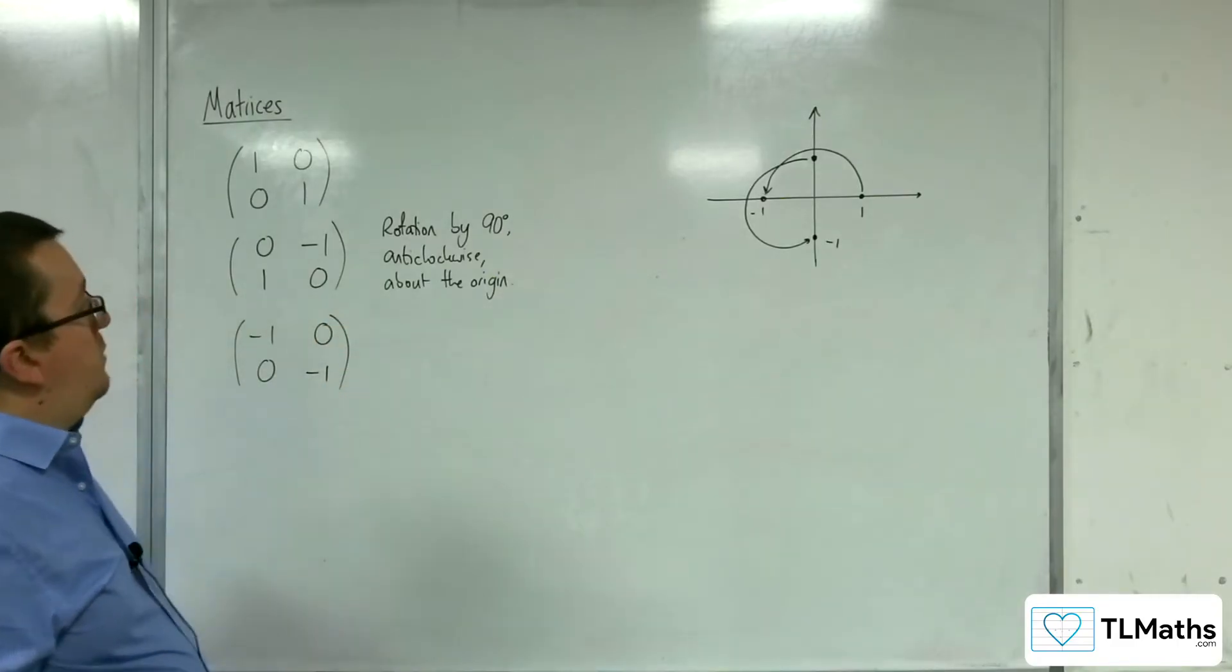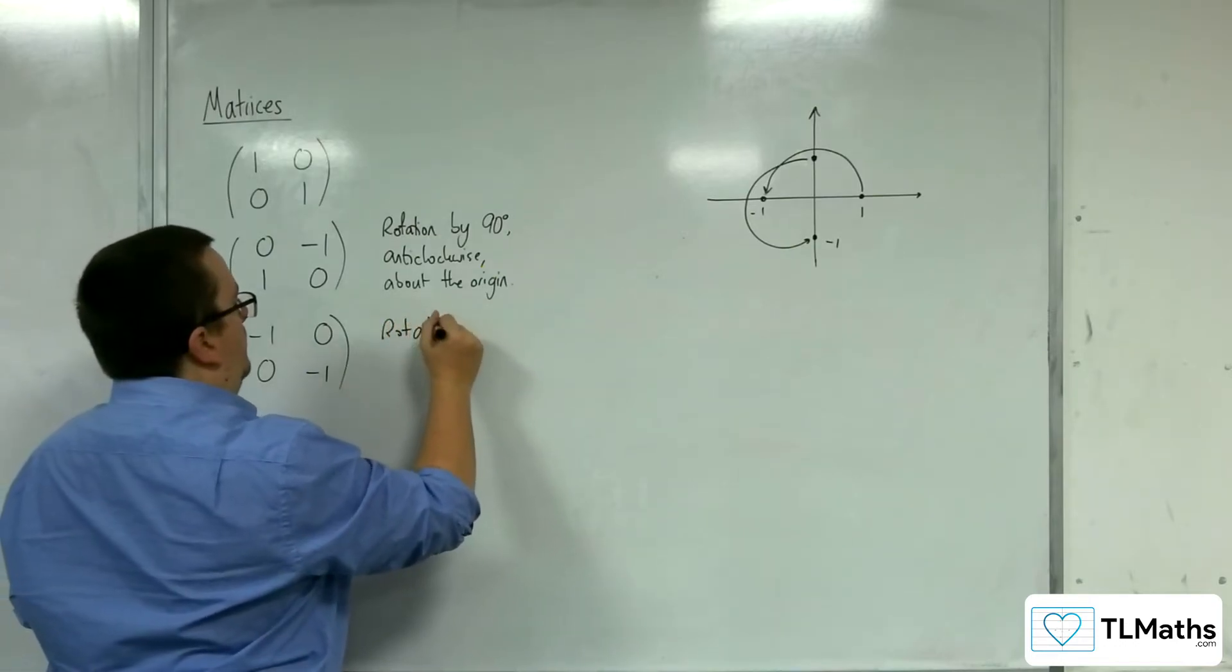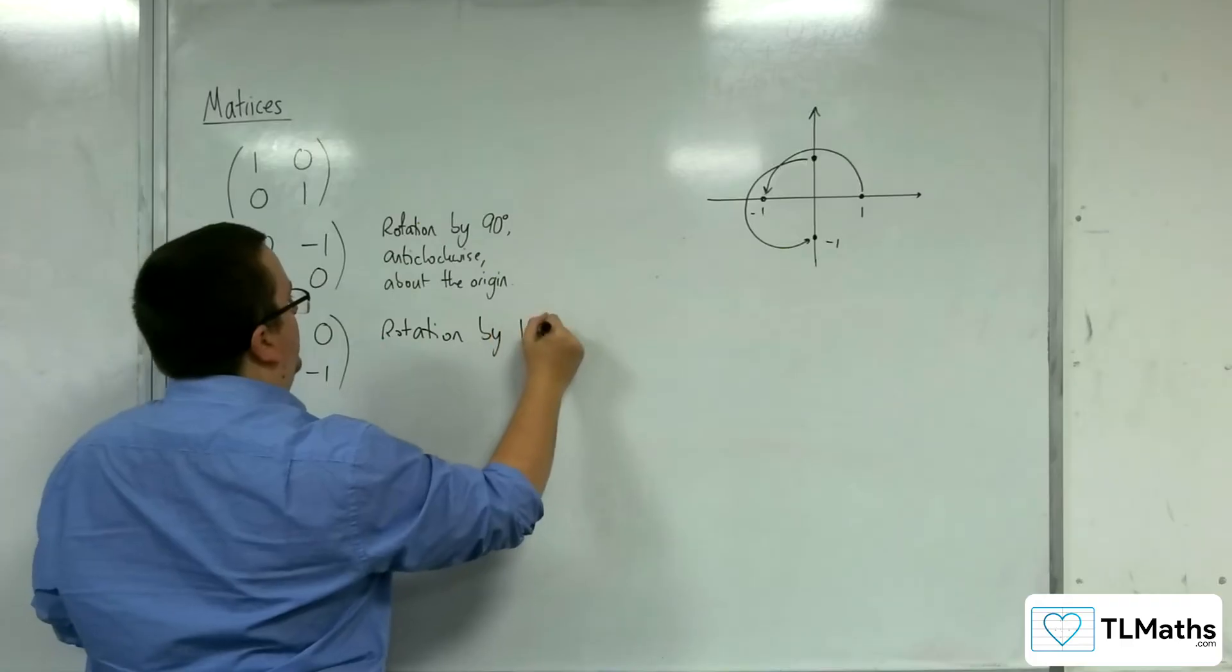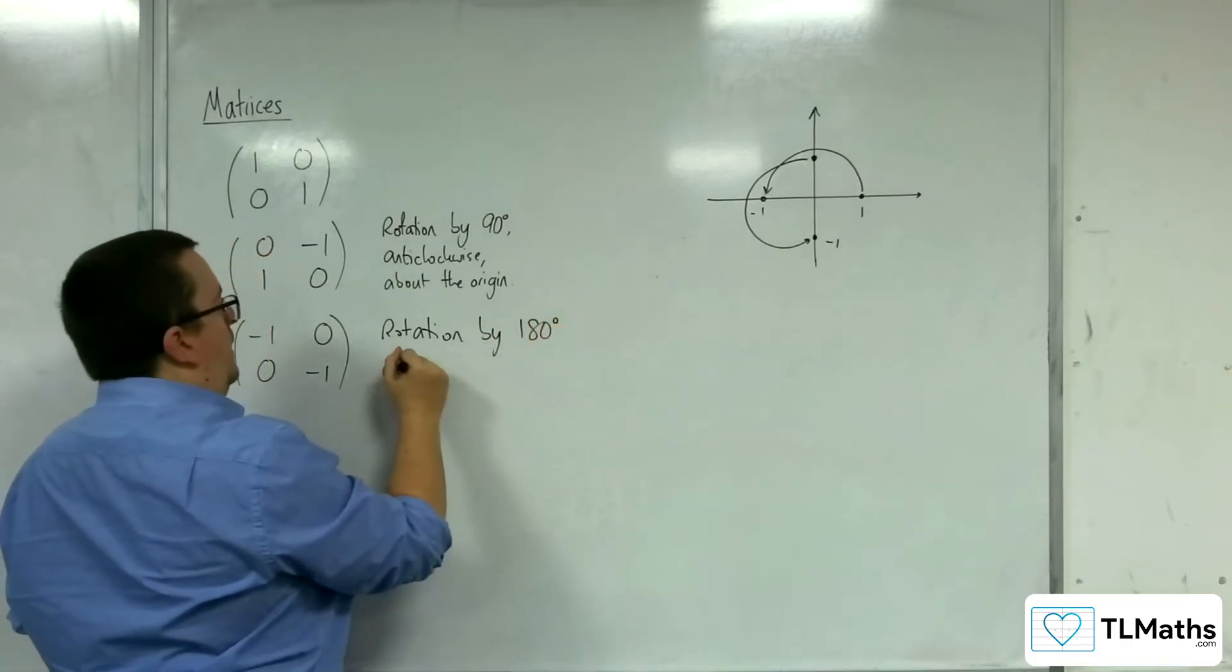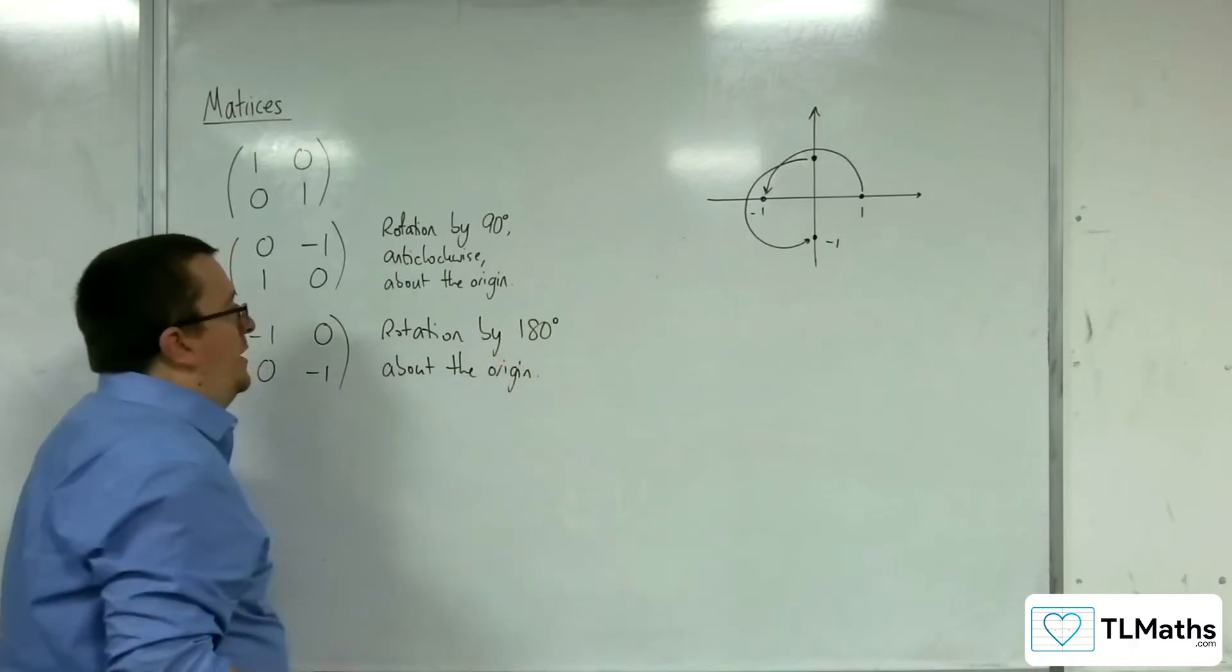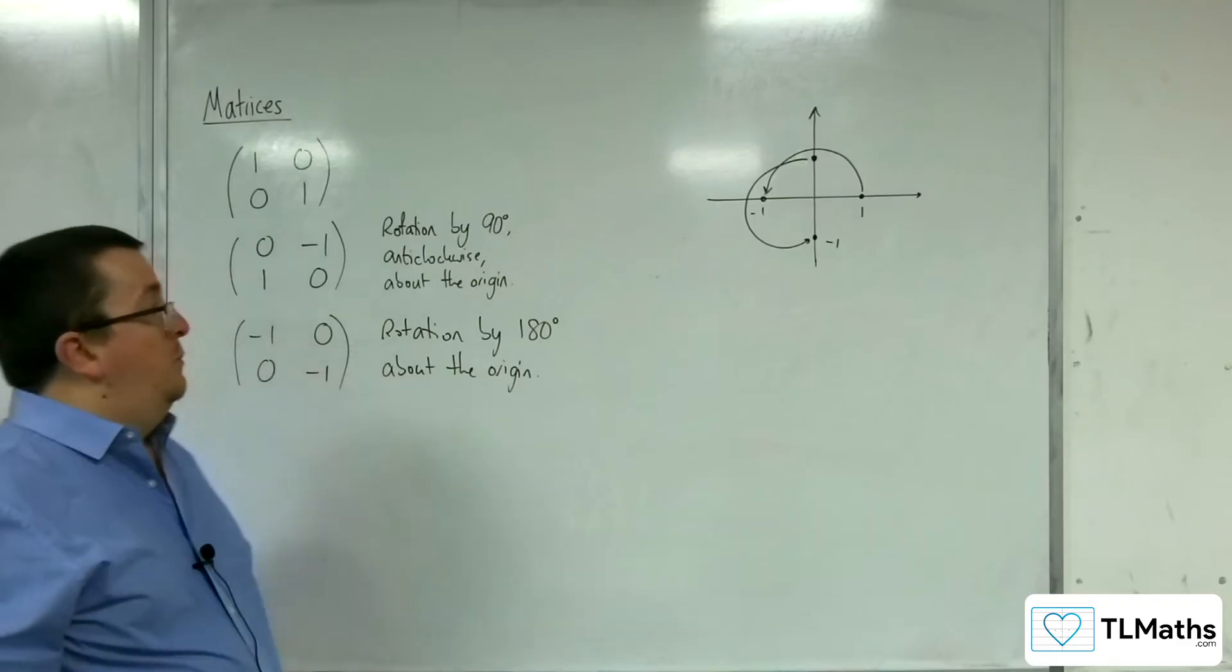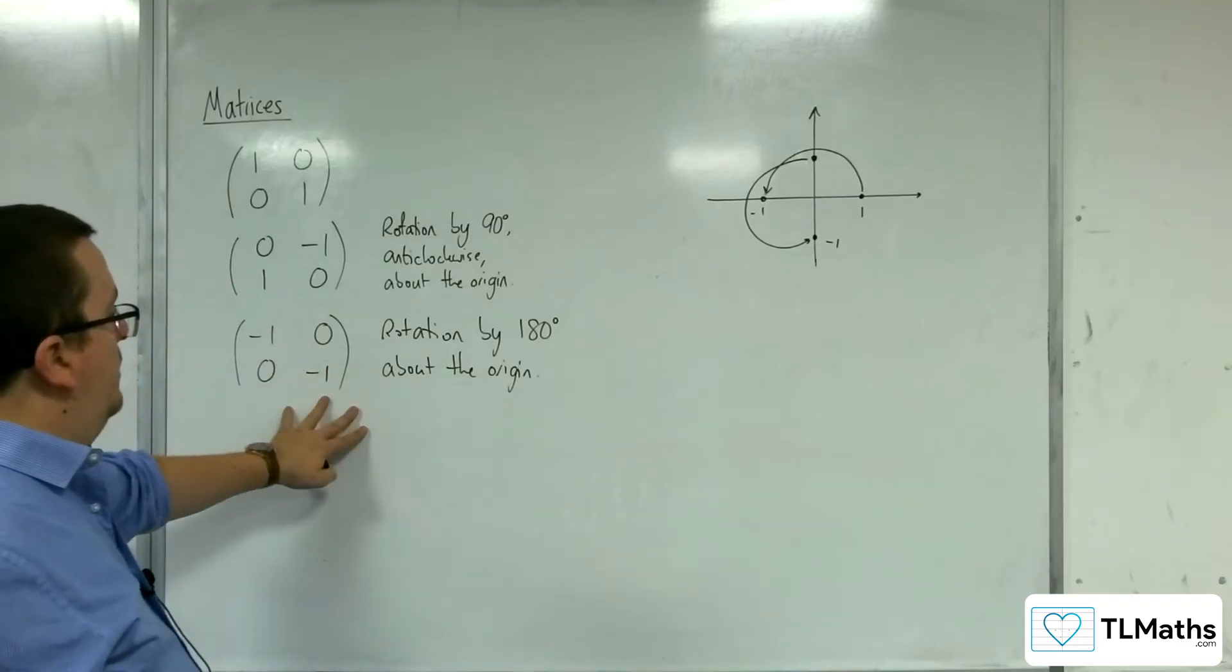So this must be a rotation by 180 degrees about the origin. Now, it won't matter if we go clockwise or anticlockwise. So we can just leave it there. That is our rotation by 180 degrees.